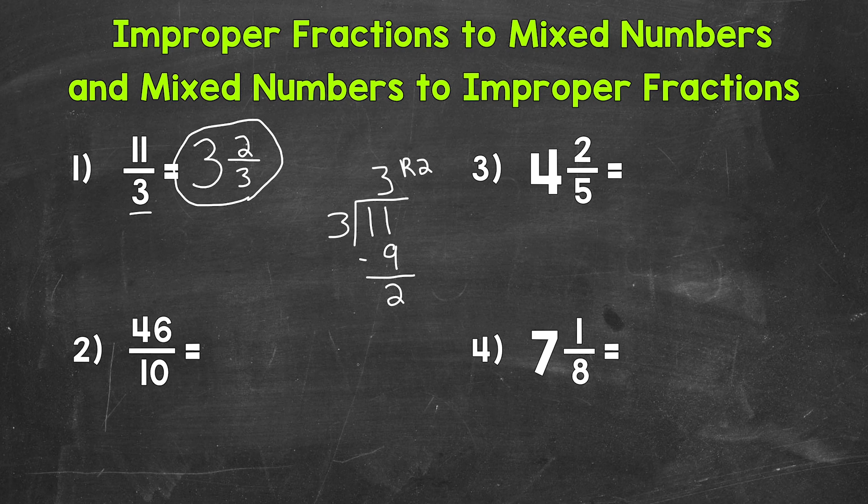Let's move on to number 2, where we have 46 tenths. So again, we need to divide. 46, the numerator, divided by 10, the denominator. Let's write this one out as well. So we have 46 divided by 10. So we need to think, how many whole groups of 10 do we have in 46? Well, 4. That gets us to 40.